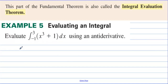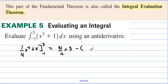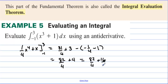Evaluating an integral. Let's evaluate this integral. The integral of x to the third is one-fourth x to the fourth, and then plus x, and we're evaluating from negative 1 to 3. So we're going to plug 3 in: we have 81 over 4 plus 3, and then minus we have negative 1 fourth minus 1. Well, 81 fourths plus 1 fourth is 82 fourths. Then we have 3 plus 1 is 4. We have 82 fourths plus 16 fourths. We have 98 over 4 — let's reduce — 49 over 2.